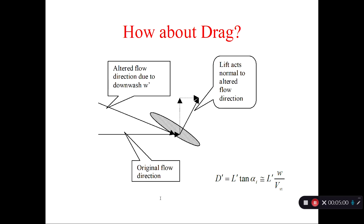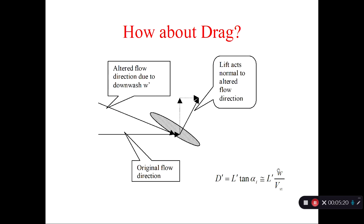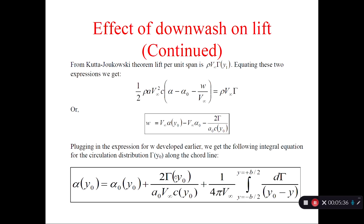So how about the drag? We said the lift is tilted backwards. So this is the lift vector. The induced drag is L' times sine of alpha_i, I should have said. Sine of alpha_i is same as alpha_i, which is w over V∞. So this is the induced drag. So as soon as you know the circulation, you can solve for the lift and also for w. Then you can compute the sectional drag, then you can integrate over the entire wing. So the crux of the problem is solving for this gamma from this lifting line model.